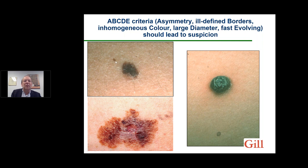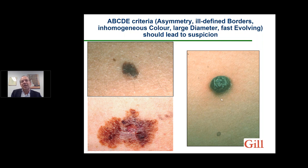Here you have the clinical appearance of melanoma, following what the WHO has called the ABCDE criteria: asymmetry, ill-defined borders, inhomogeneous color, large diameter, and fast-evolving lesion. All of these should lead to suspicion by the patient, the family doctor, or anyone seeing these types of lesions. In contrast, a totally benign mole is a small nevus. Sometimes melanomas are not asymmetrical but very round — here is a fast-evolving, very dark lesion with some ulceration, which is what we call a nodular melanoma.